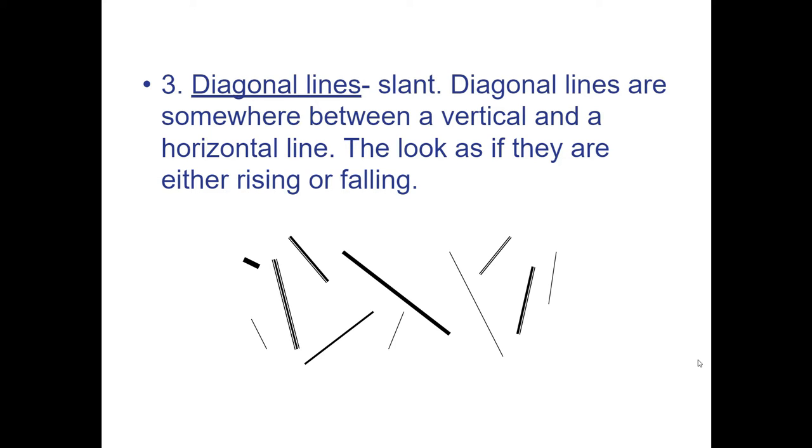Number three, diagonal lines. Diagonal lines always slant—somewhere between mostly vertical or mostly horizontal. They look like they're falling or rising, depending on how thick the line is, how bold or skinny, and the degree of which way it's leaning.